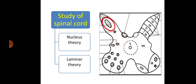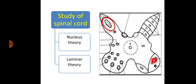There is another theory. Instead of the nucleus theory, if the spinal cord grey matter is divided into slices or laminae, then it is called the laminar theory. The total number of laminae is 10. Laminae 1 to 6 are present in the posterior grey horn, laminae 8 and 9 are present in the anterior grey horn, the 10th is present around the centre, and the 7th is related to the lateral grey horn.